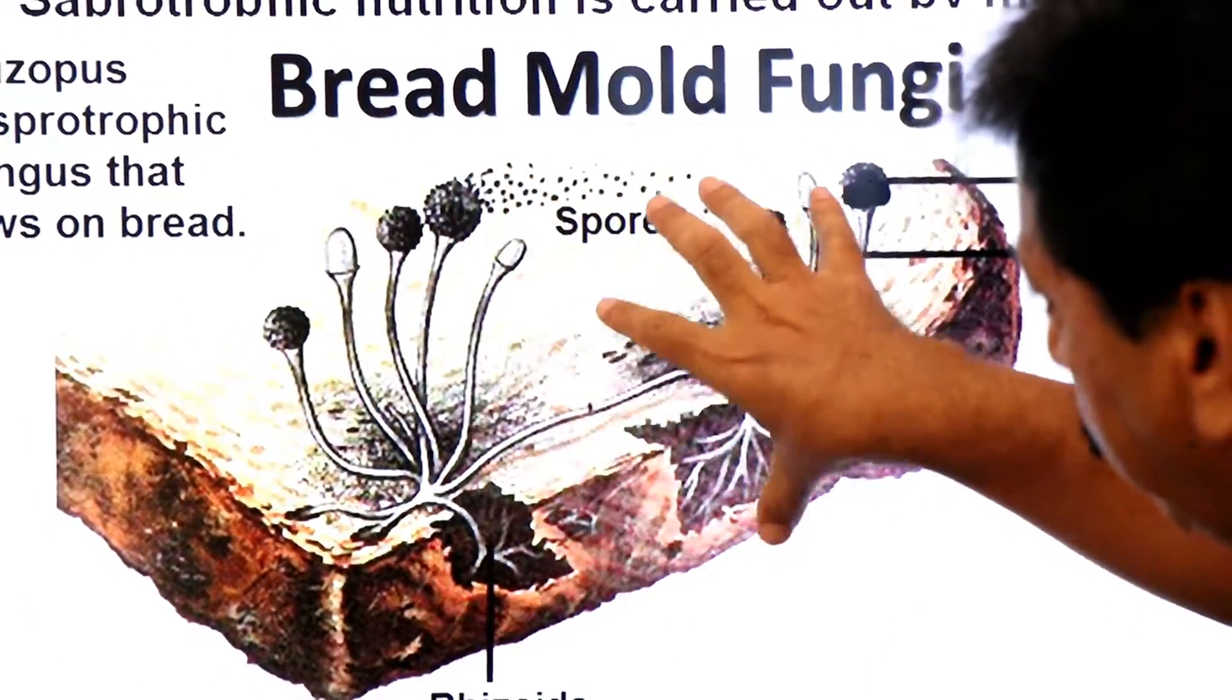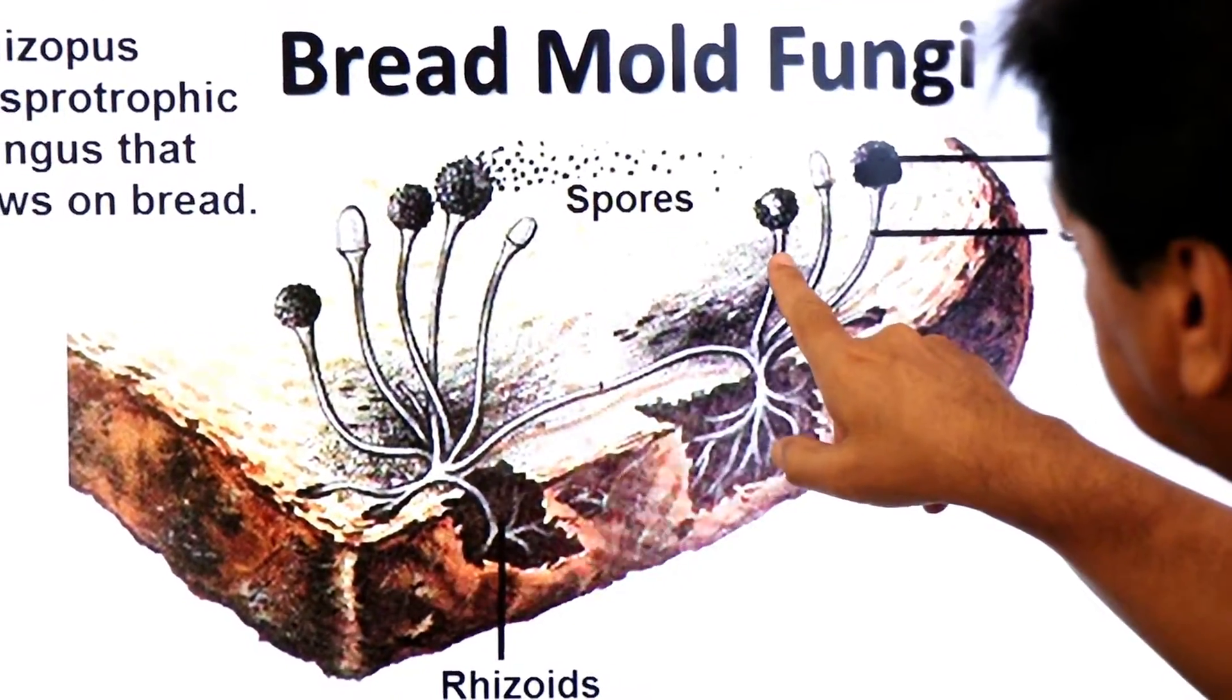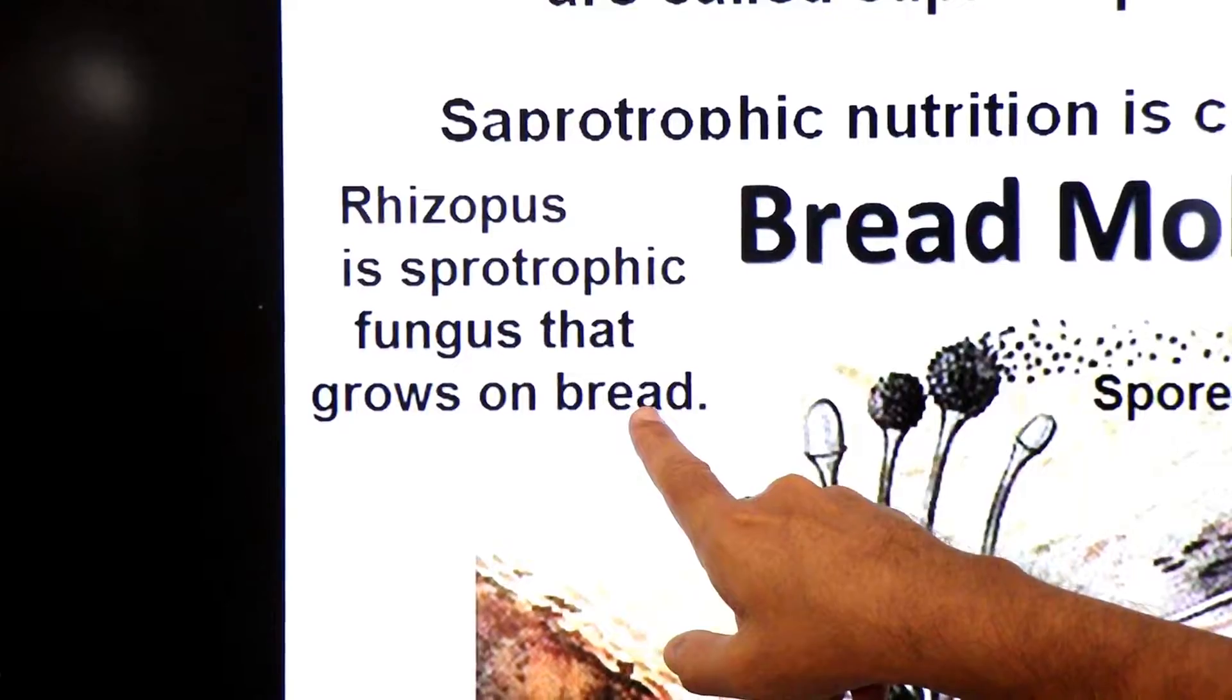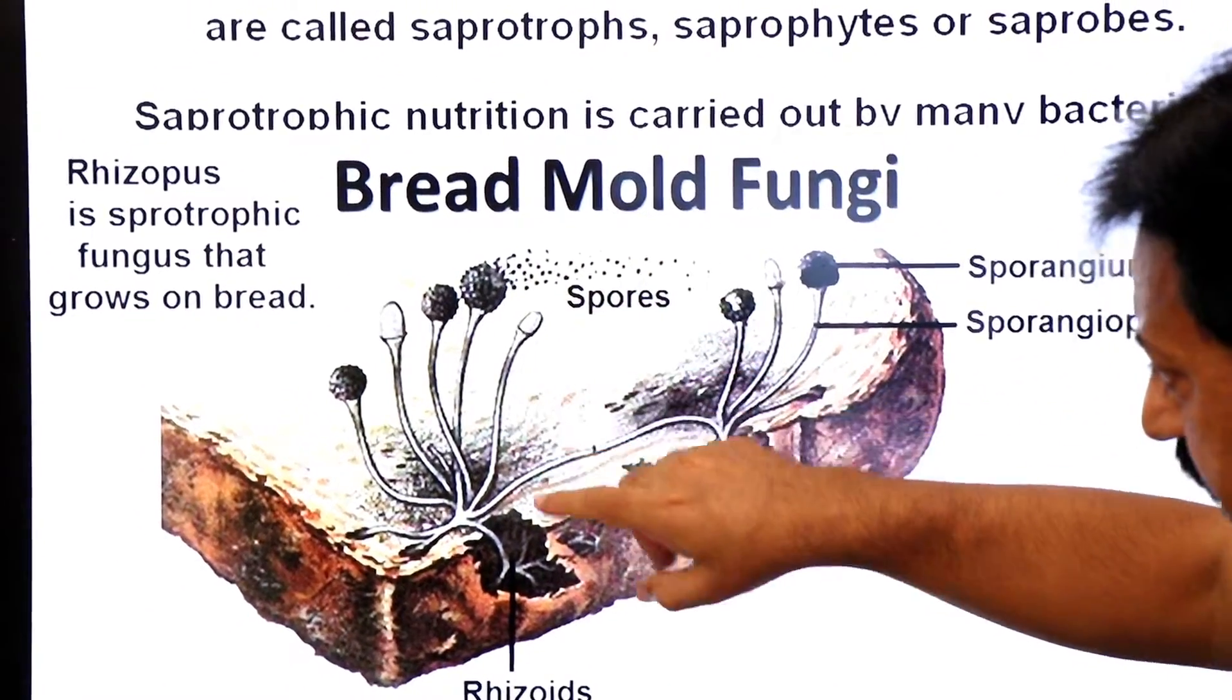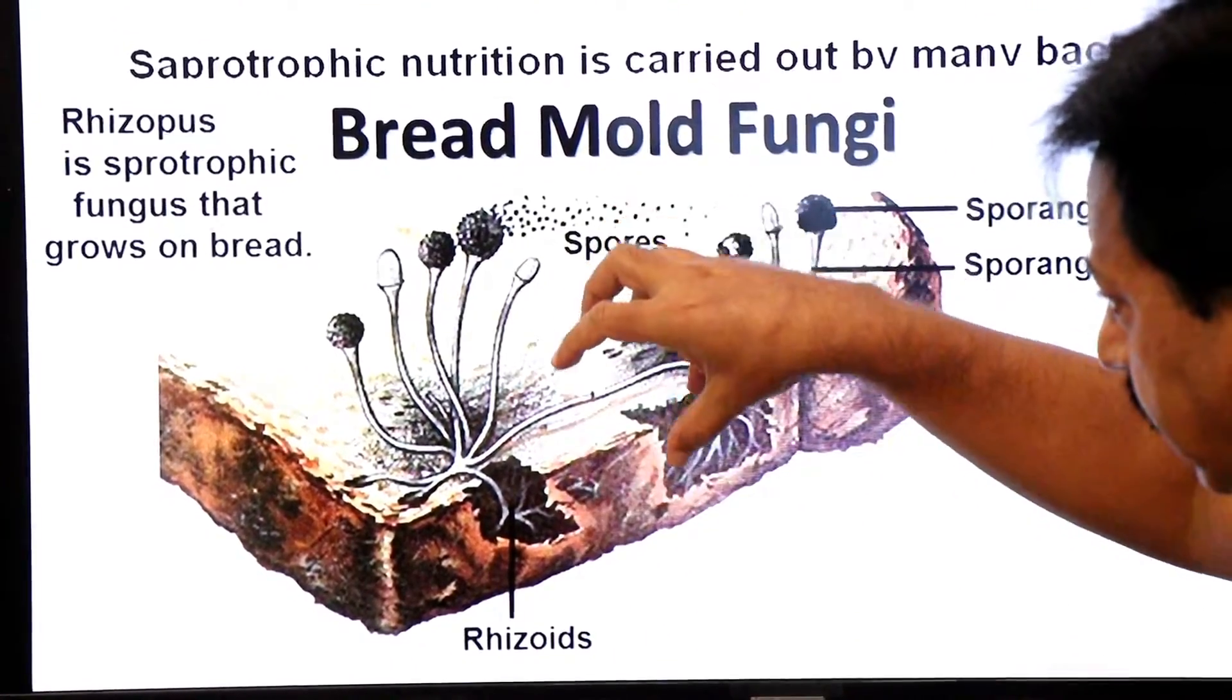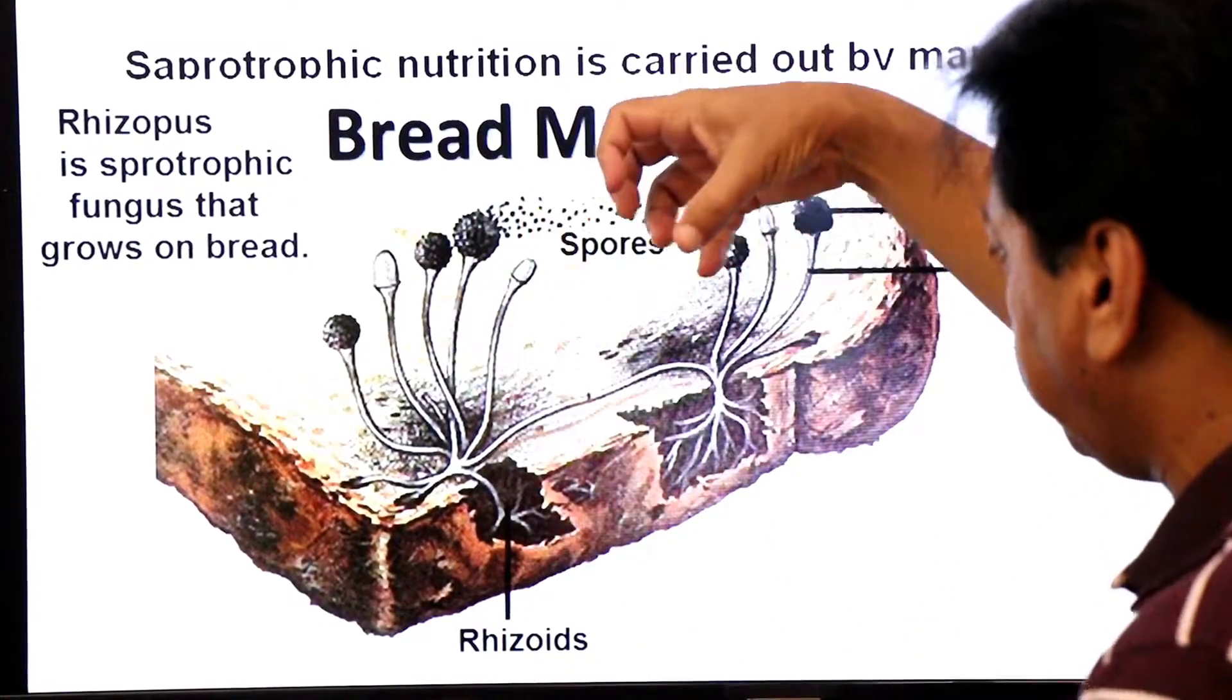You see here, this is a fungus that grows on bread. Dear students, this fungus is called Rhizopus, commonly called bread mold. So Rhizopus is a saprotrophic fungus that grows on bread. It has special hyphae which are called rhizoids that absorb the nutrients from the bread.